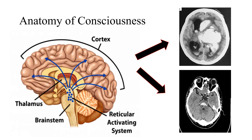To understand disturbed conscious level, we have to understand the anatomy of consciousness. Simply, the anatomy of consciousness needs an intact brain stem where the reticular activating system is clear, and a good functioning cerebral cortex. So to have disturbed conscious level, you have to have either a brain stem lesion, even if a small one, or a very large cerebral lesion.